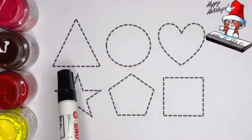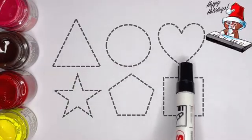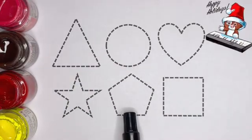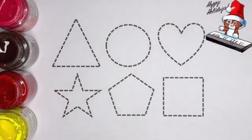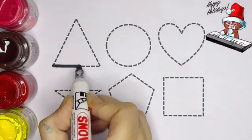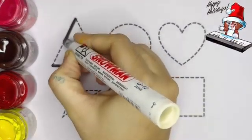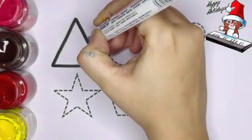This is black color. Triangle, circle, heart, star, pentagon, square. Now let's trace the shapes. Triangle kids, this is triangle.